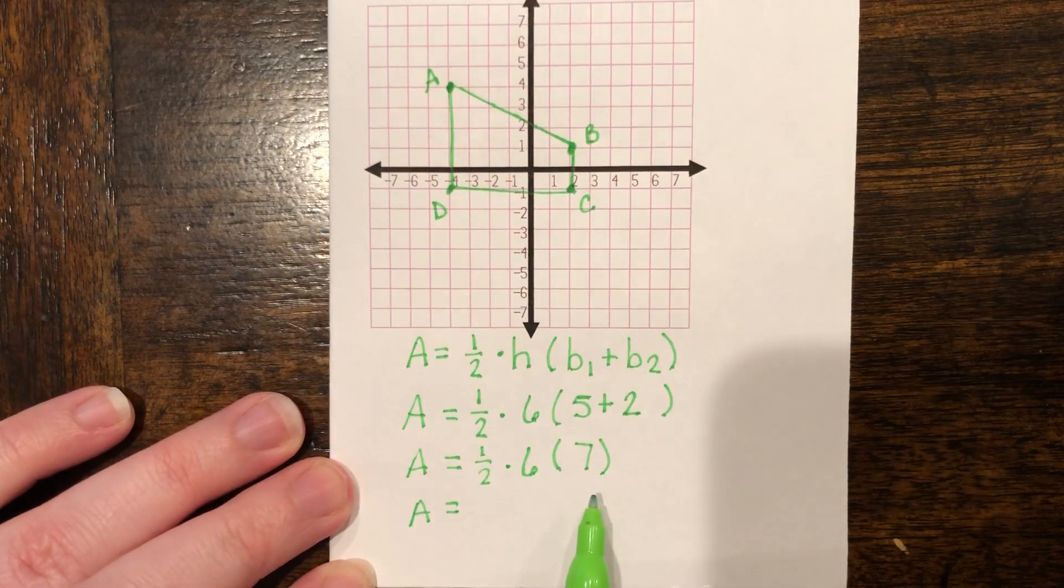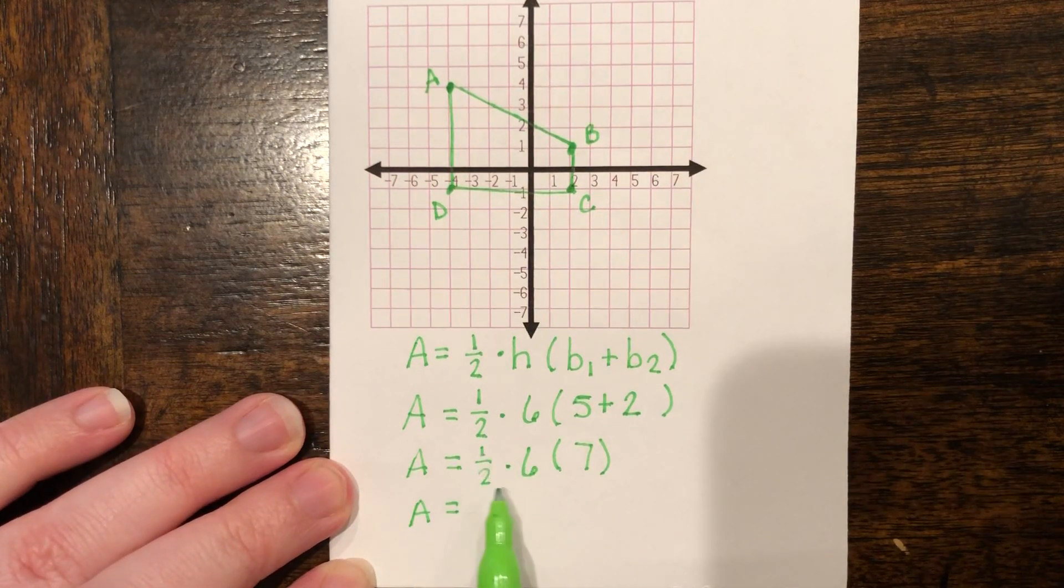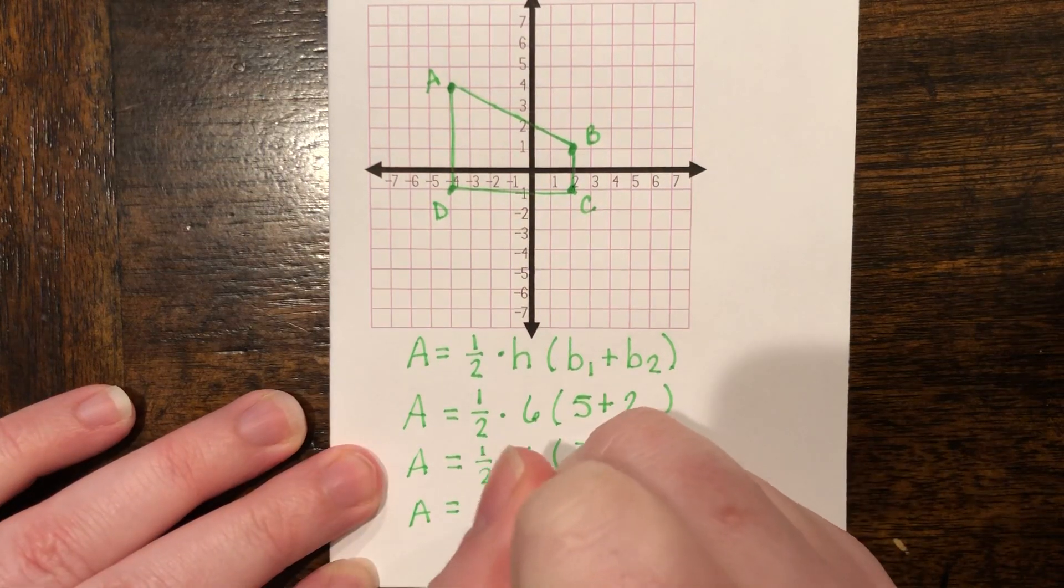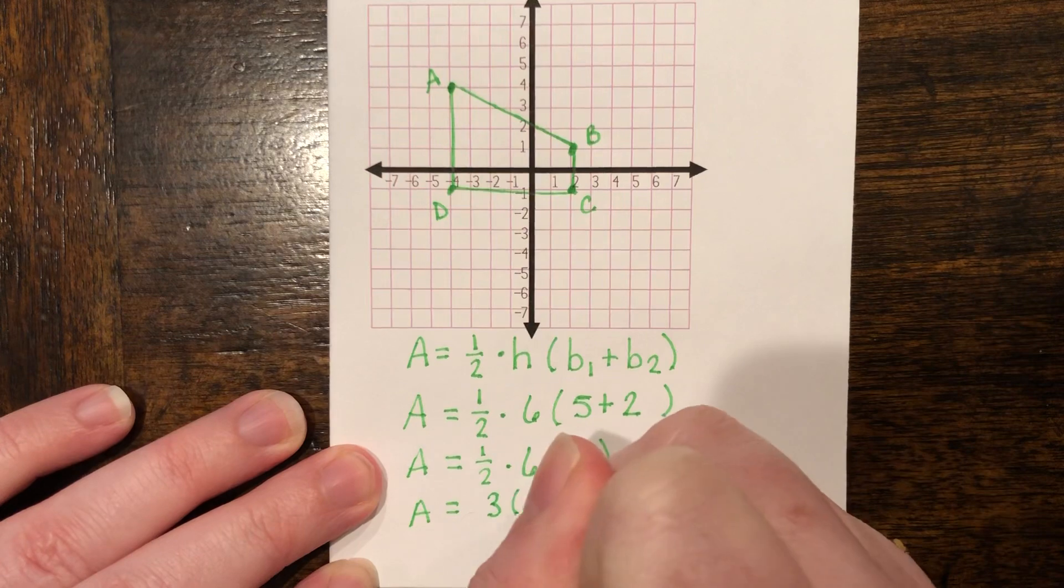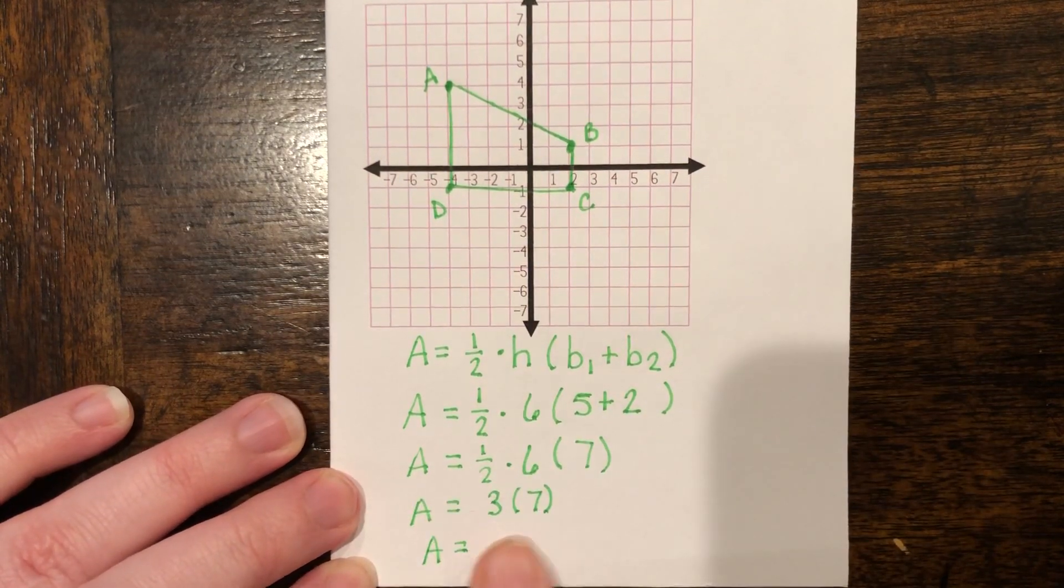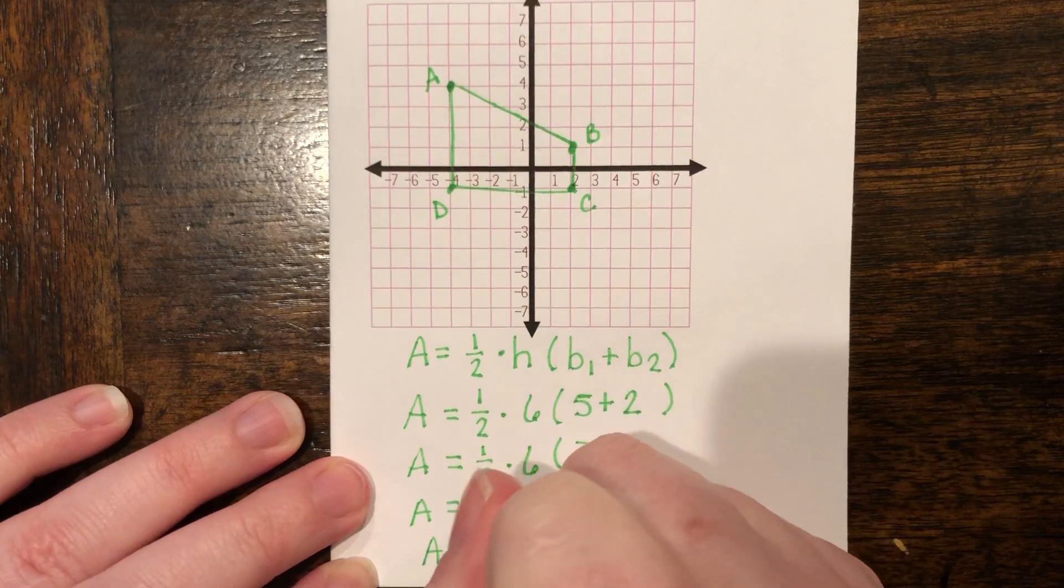Now we have 1/2 times 6 times 7. We have to do this set of multiplication first. So we have 1/2 times 6, which gives us 3. Bring down the rest of your equation. And then lastly, we have 3 times 7, which gives us 21.